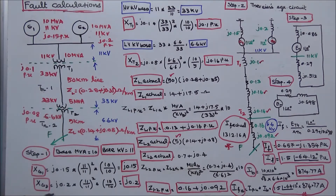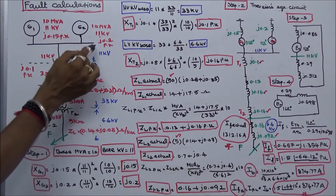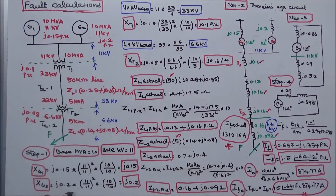Similarly, XG2 is equal to the given value j0.2 multiplied by (11/11)² × (10/10), which equals j0.2 per unit.